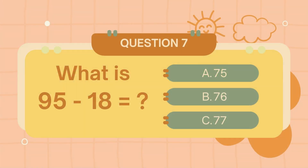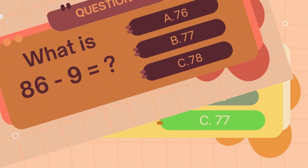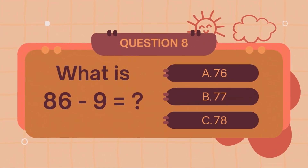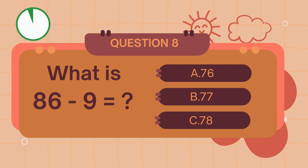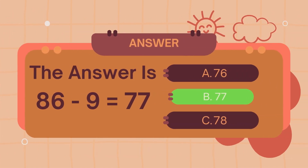What is 95 minus 18? What is 96 minus 9? The answer is 77. What is 86 minus 9? What is 96 minus 9? The answer is 77.